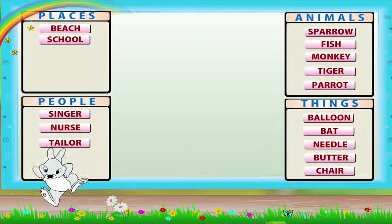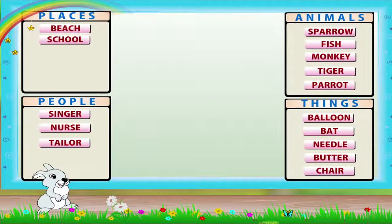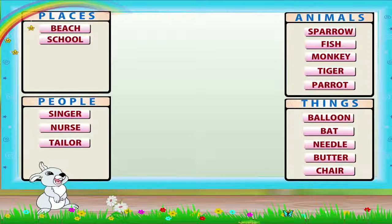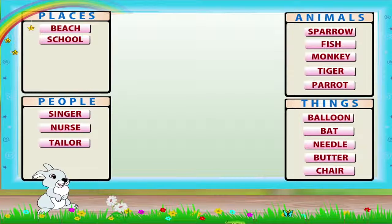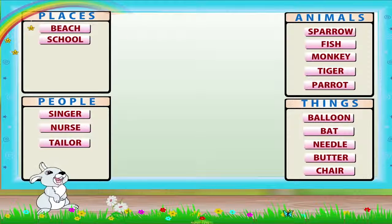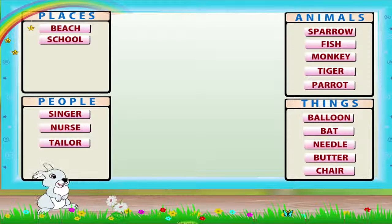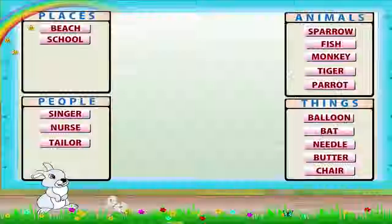So remember, Rainbow — naming words are called nouns. We use naming words for people, places, animals and things.